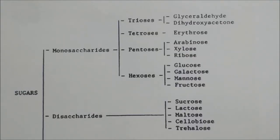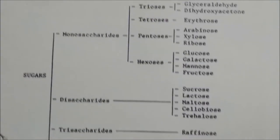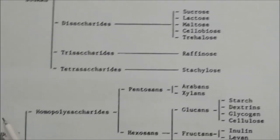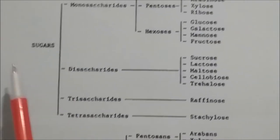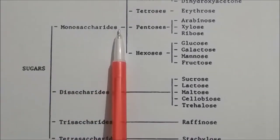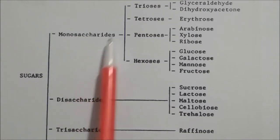Welcome. In this session we look at carbohydrates. On the basis of sugars, there are two types in carbohydrates: sugars and non-sugars. The classification of sugars begins with monosaccharides, which include triose, tetrose, pentose, and hexose sugars.